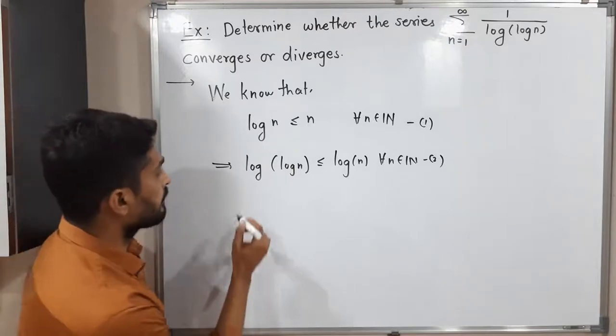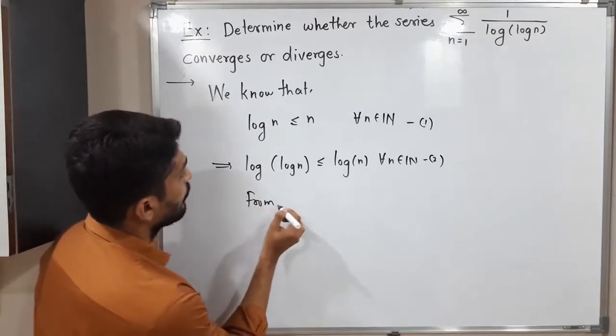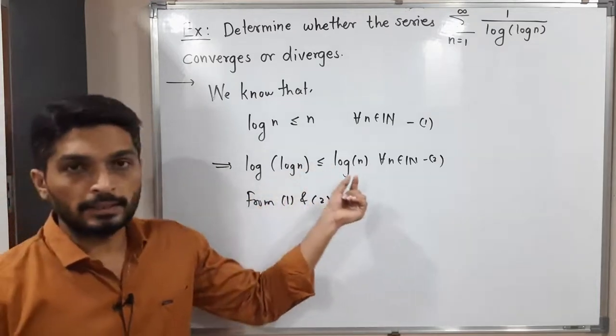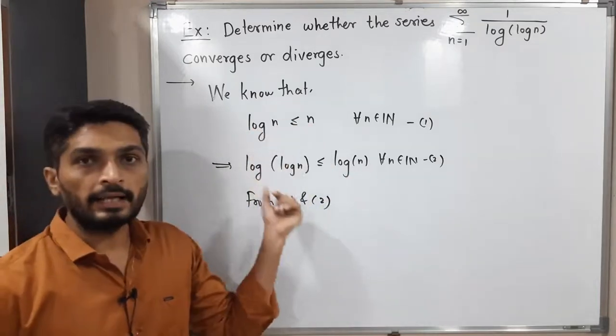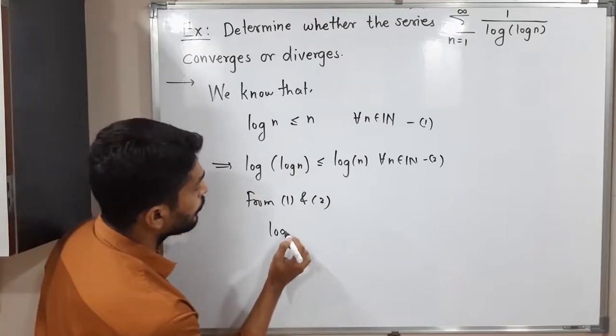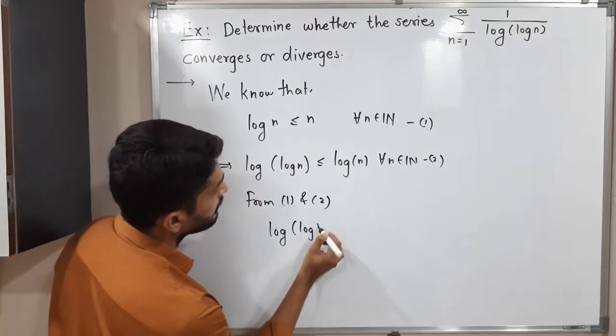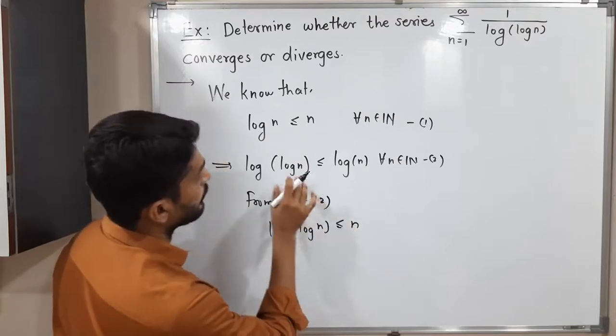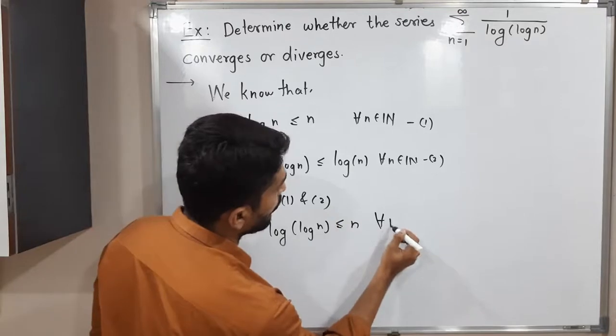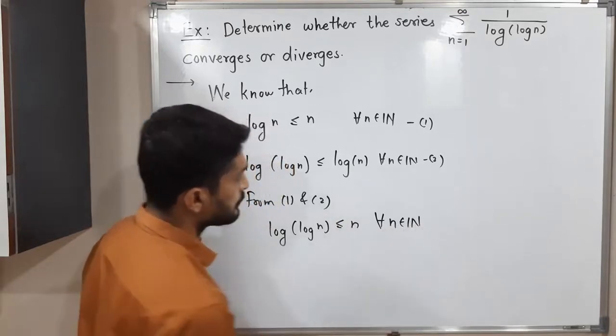So from 1 and 2, what can we write? You know that if a less than b and b less than c, then a less than c. By using that result, I can write log of log n is less than or equal to n, for all n belongs to the set of natural numbers.